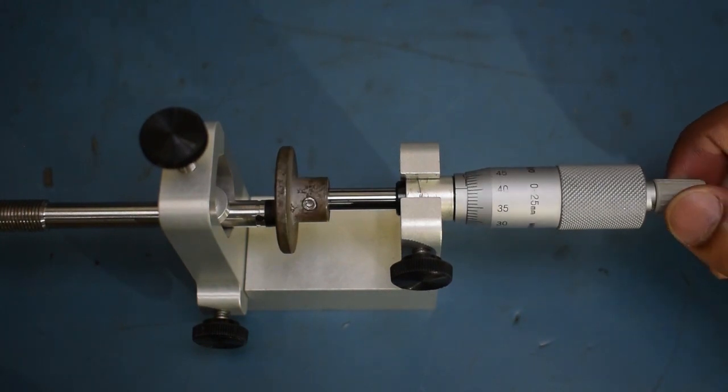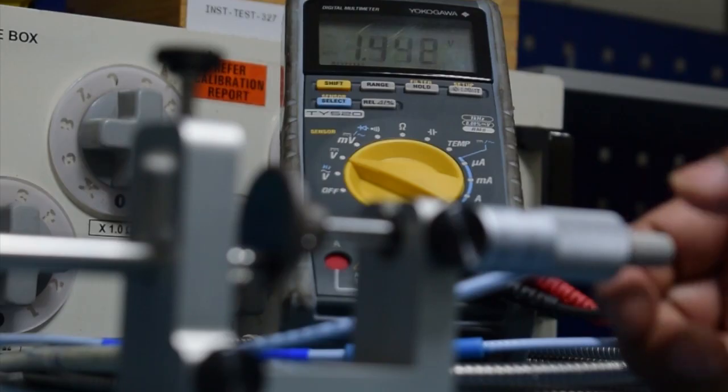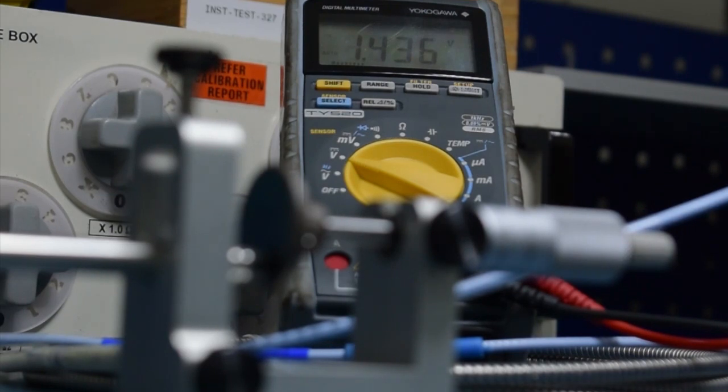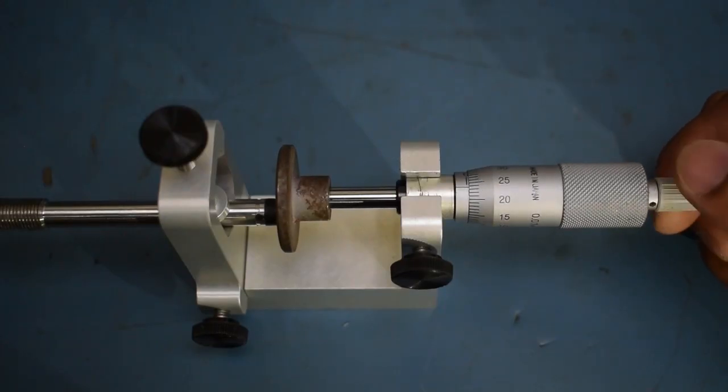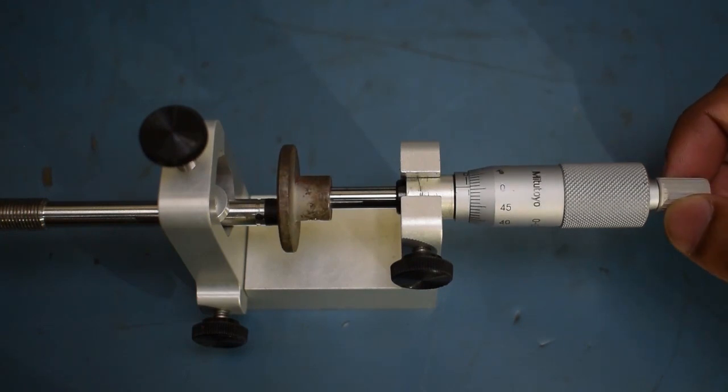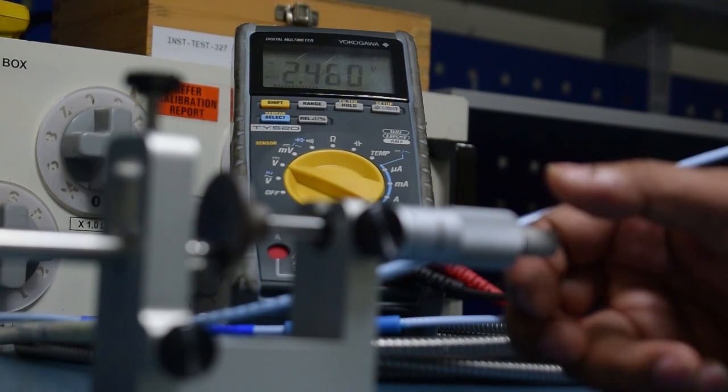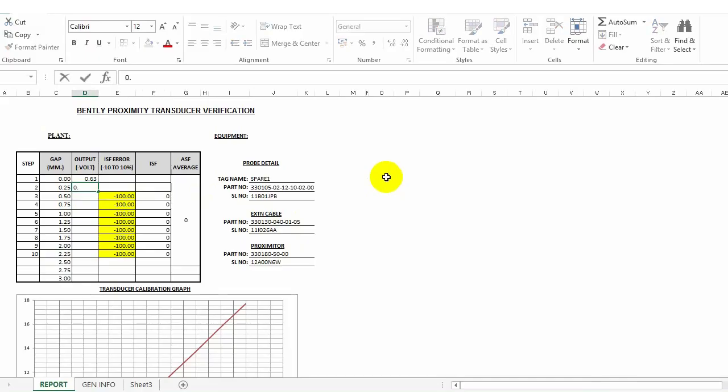Note down the voltage values in 0.25 mm increments and enter in the verification chart. The calculated ISF and ASF is displayed in the Excel sheet.